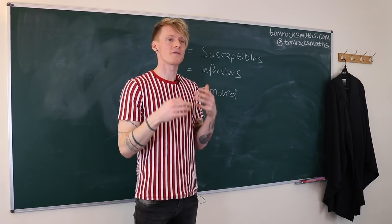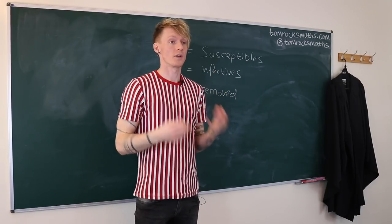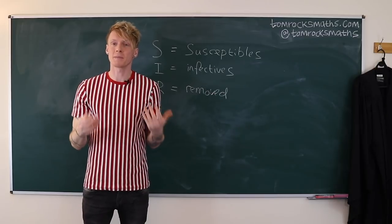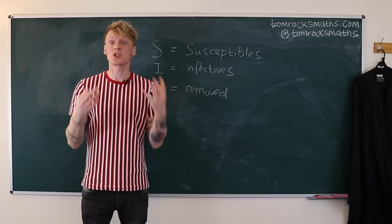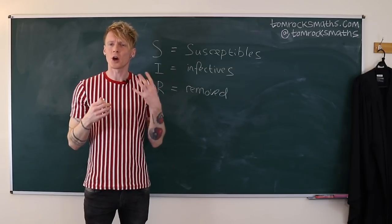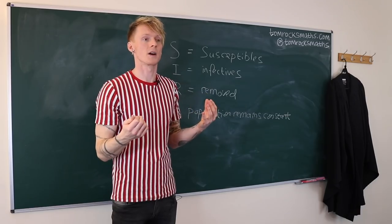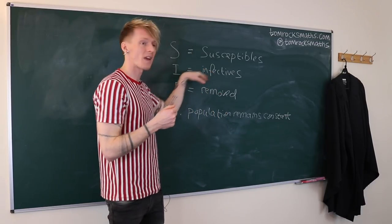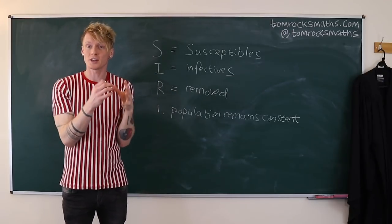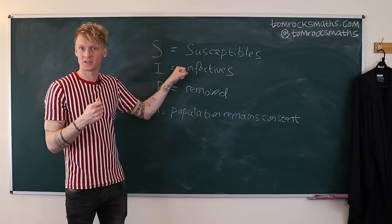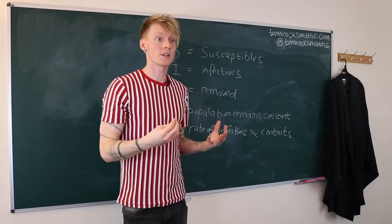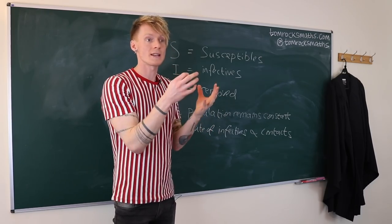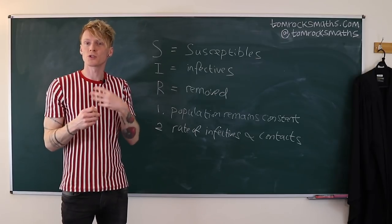With all mathematical models we have to make various assumptions to simplify real-world phenomena, because things are too complicated to express in simple equations. Our first assumption is that the epidemic is sufficiently short so that the total population remains constant. The second assumption is that the rate of increase in infectives is proportional to the contact between susceptibles and infectives, occurring at a constant rate. Our third assumption is that there is a constant removal rate — either a death rate or a recovery rate.